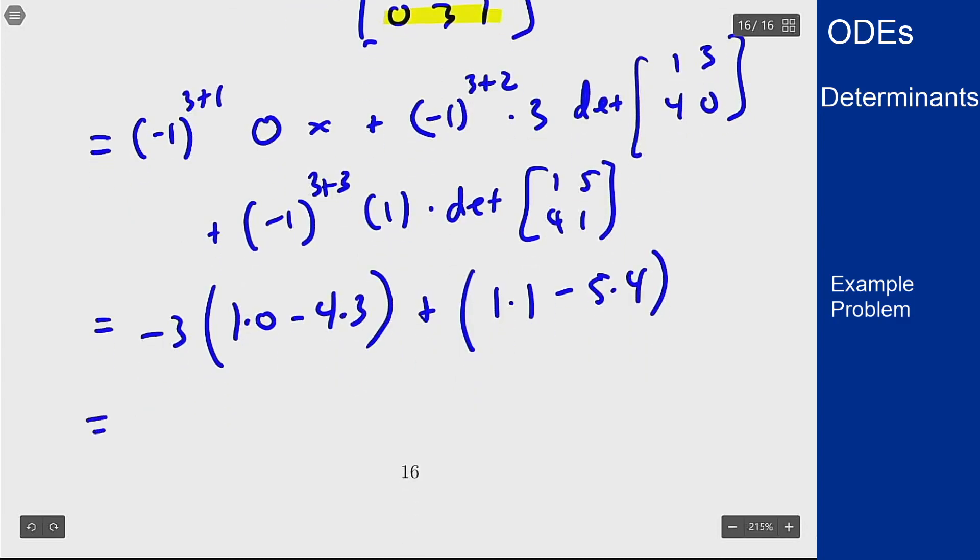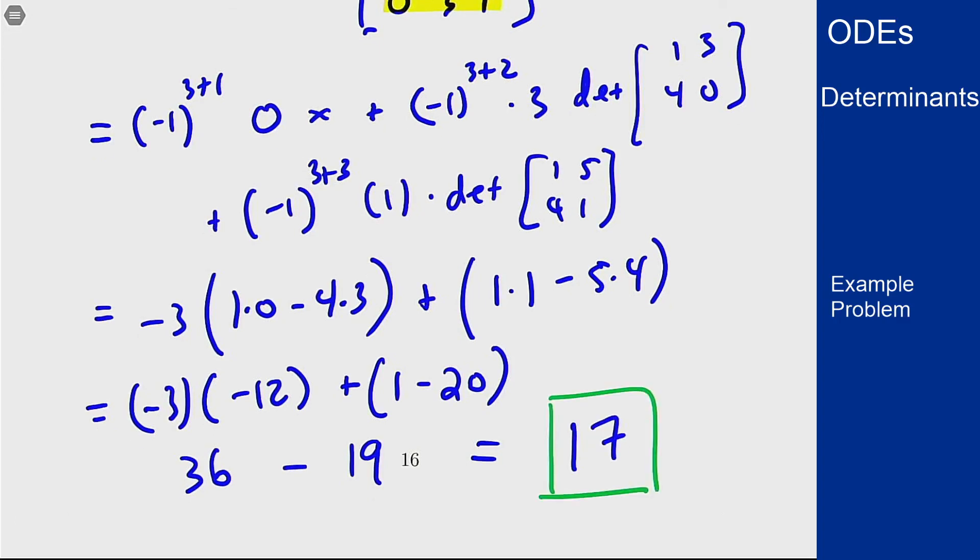Here I see negative 3 times negative 12, plus 1 minus 20, so I see 36 minus 19, which is 17, which then is the determinant of this matrix.